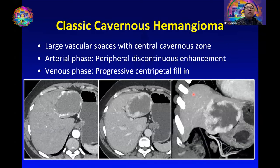The classic cavernous hemangioma is composed of large vascular spaces with a central cavernous zone. On the arterial phase, the classic appearance is a peripheral discontinuous nodular enhancement that is the same enhancement as the blood pool.